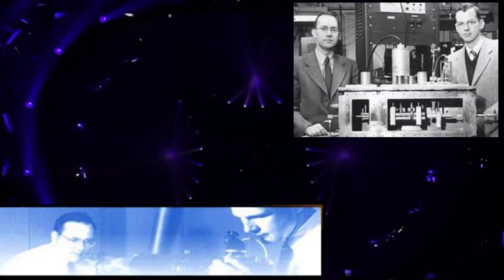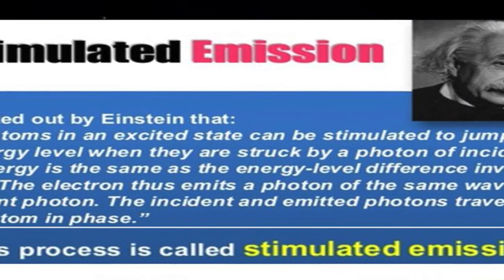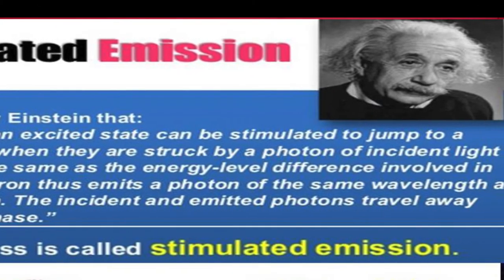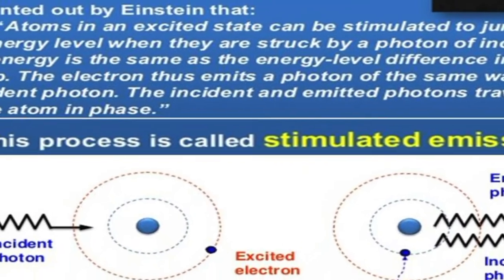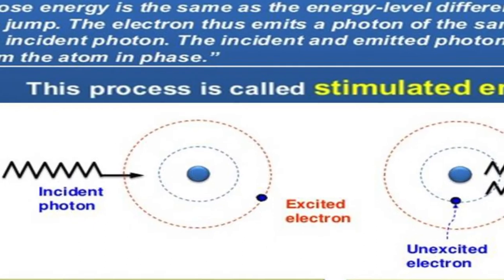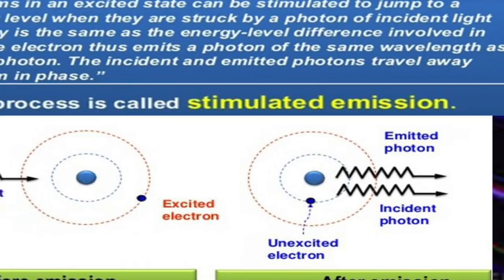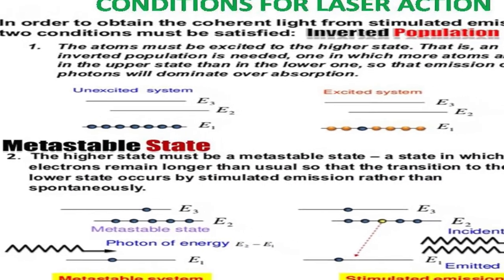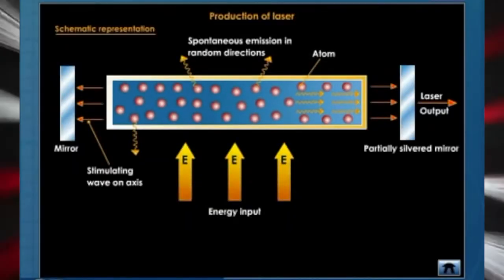The production of laser is based on the principle of stimulated emission. To obtain coherent light from stimulated emission, two conditions must be satisfied: there should be a population inversion with more atoms in the upper state than in the lower one, and also the higher state must be a metastable state.